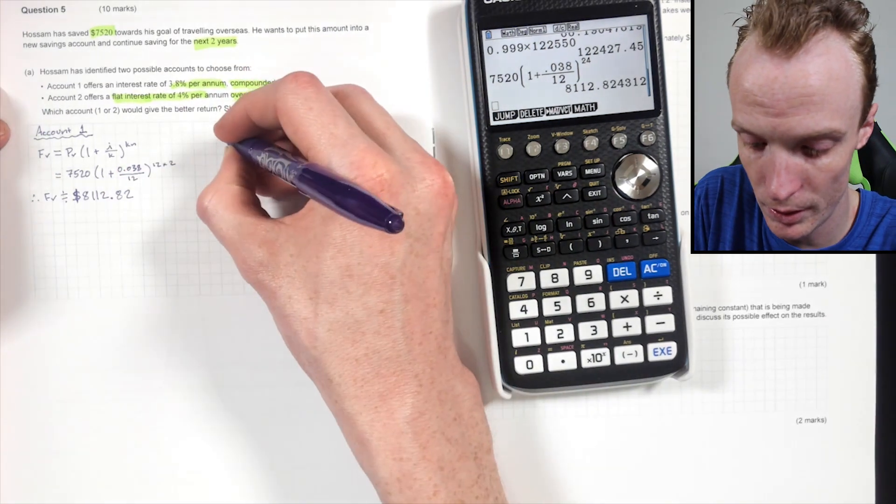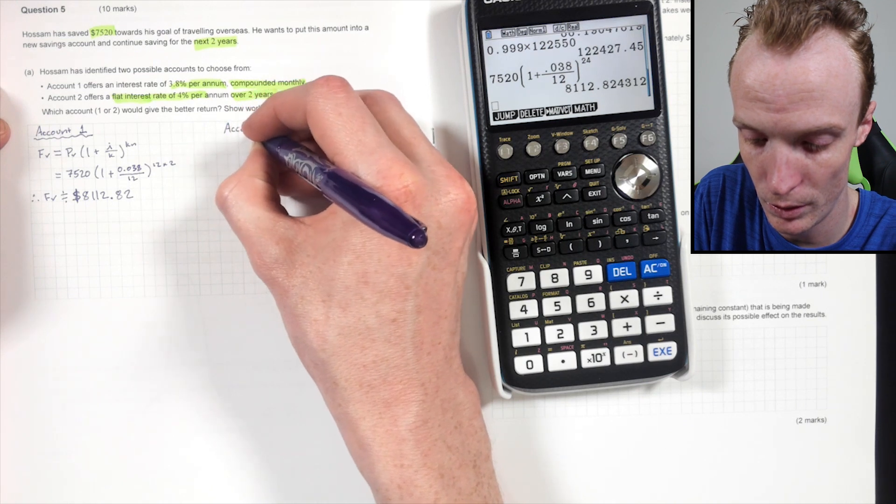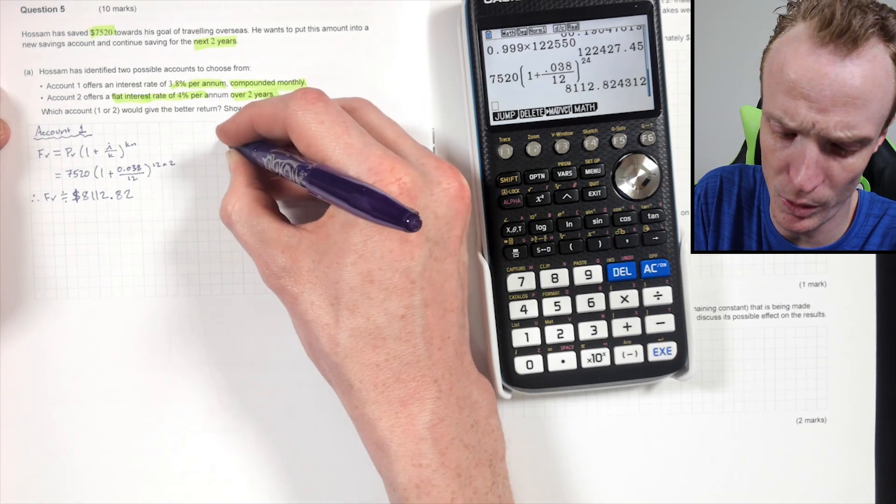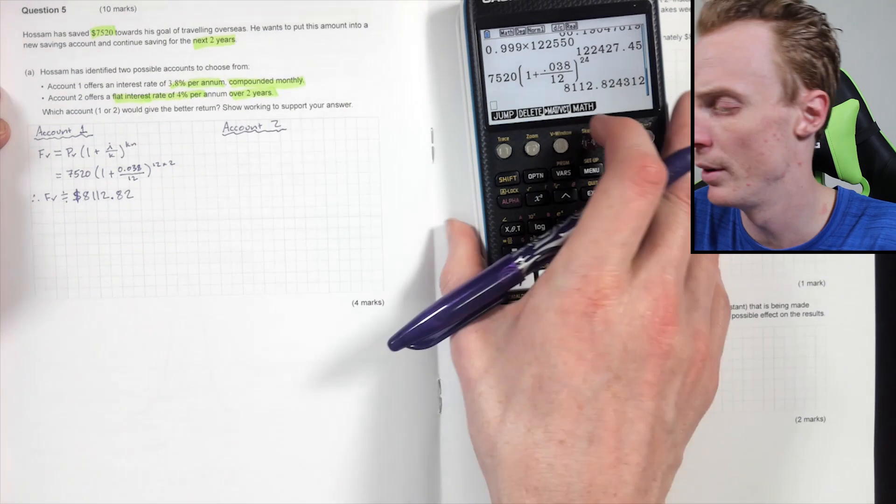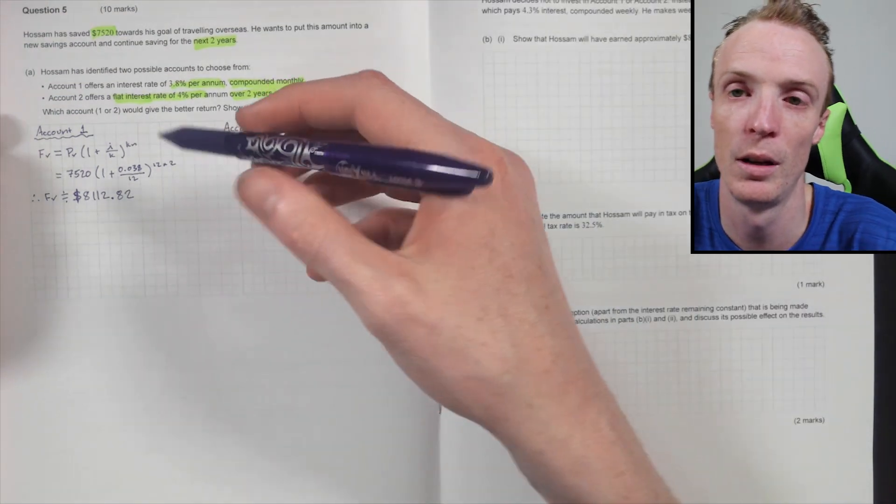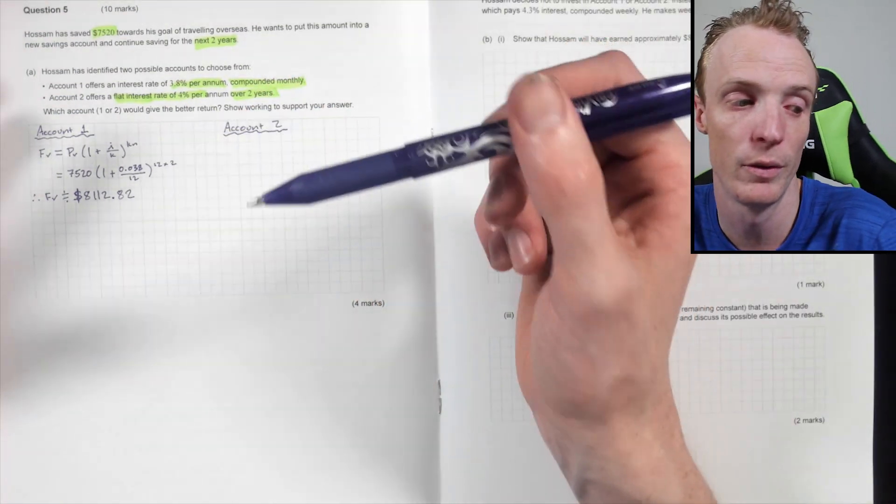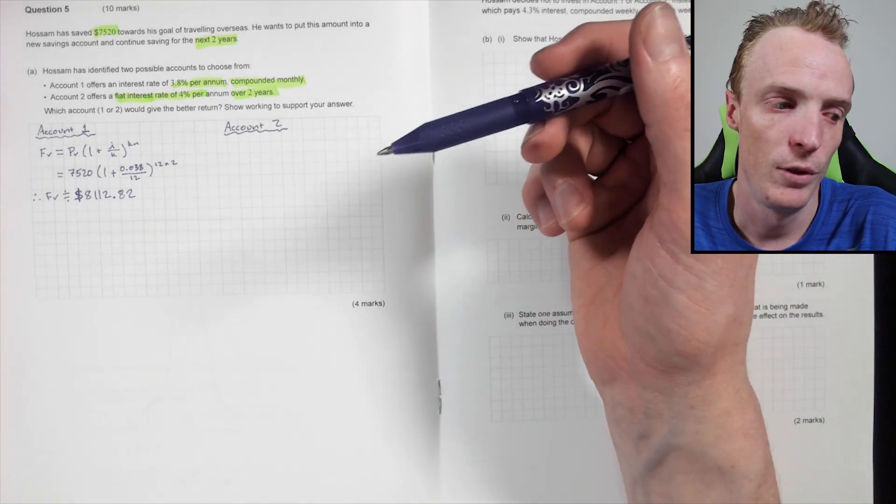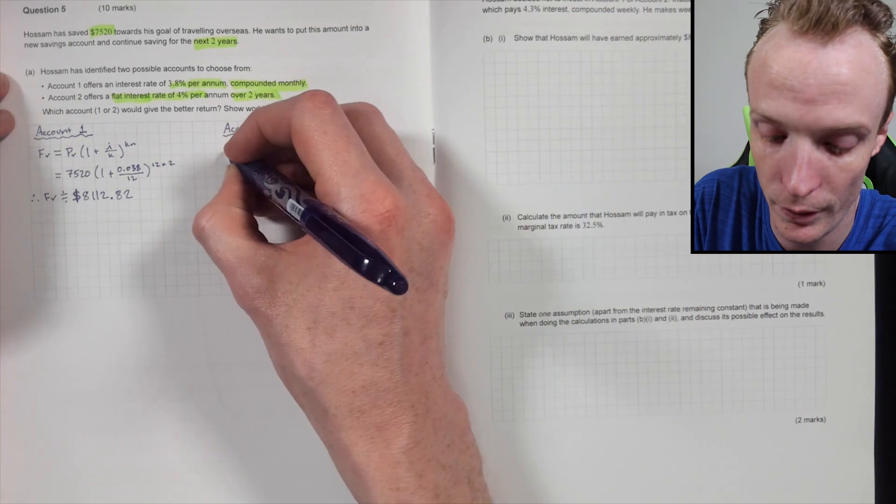And then account two. So account two. So the key thing with this question I think is identifying that one of them is going to be simple interest and one of them is going to be compound interest. If you use compound interest in them both, you're not going to get the right answer. If you use simple interest in them both, you're not going to get the right answer.